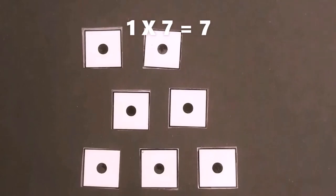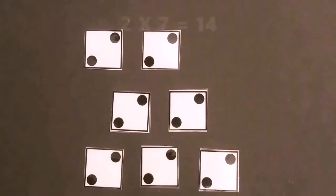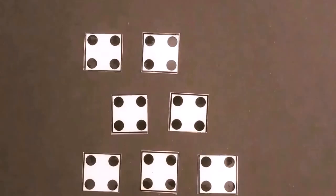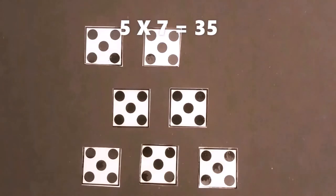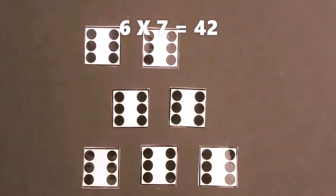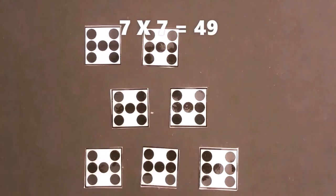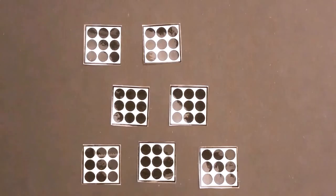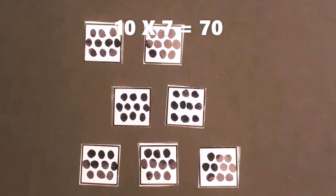One times seven is seven. Two times seven is fourteen. Three times seven is twenty-one. Four times seven is twenty-eight. Five times seven is thirty-five. Six times seven is forty-five — six times seven is forty-two. Seven times seven is forty-nine. Eight times seven is fifty-six. Nine times seven is sixty-three. Ten times seven is seventy.